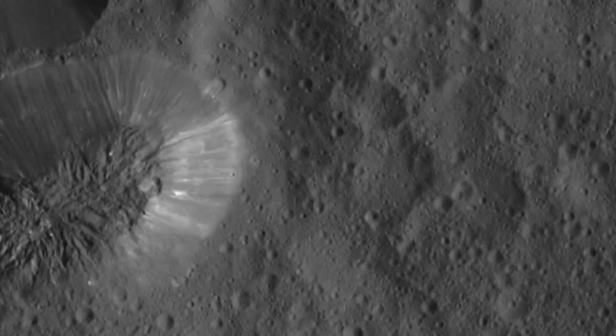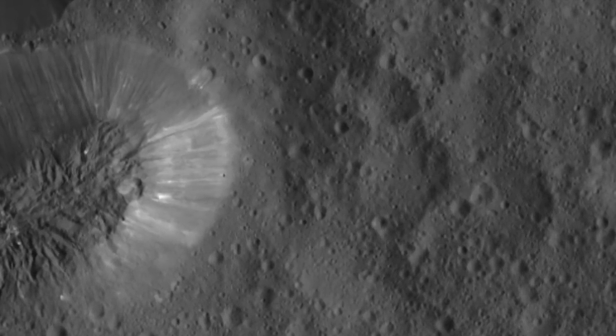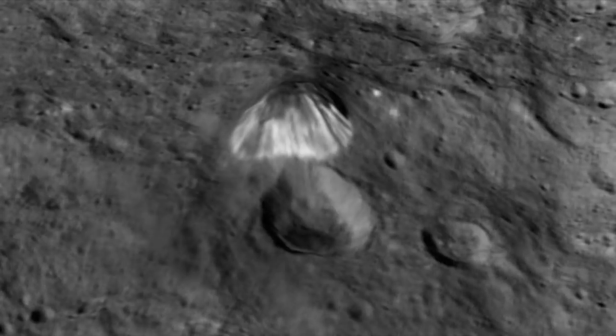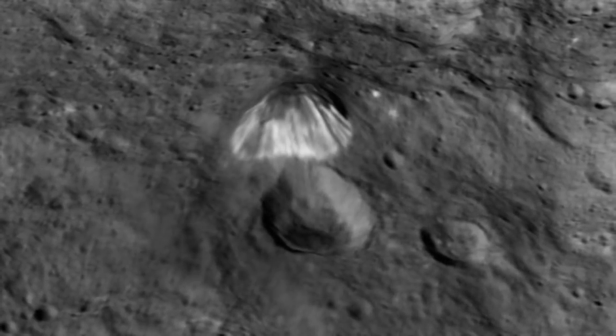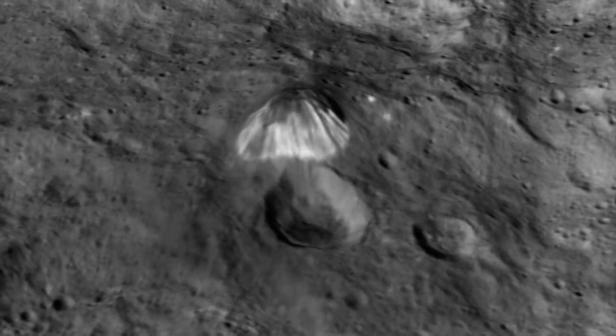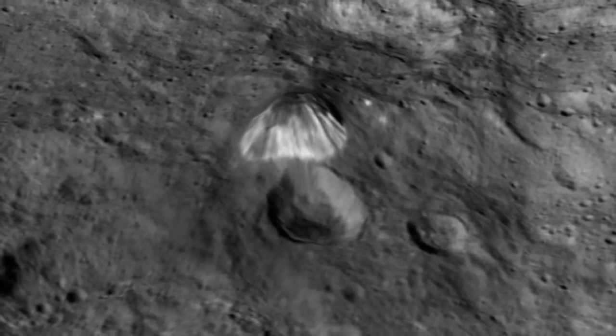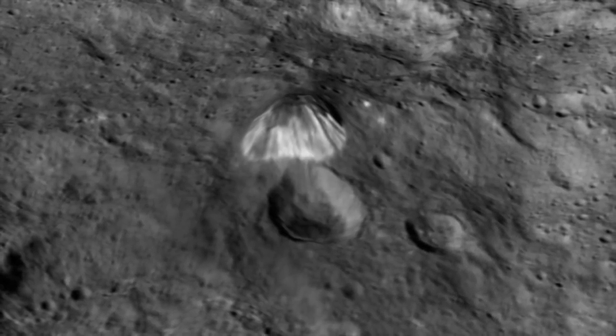The Occator Crater is 57 miles across, and as deep as Ahuna Mons is high. The large impact that tore the giant Occator Crater into the surface of the dwarf planet must have originally started everything and triggered the later cryovolcanic activity, says Andreas Nathues, framing camera lead investigator for Max Planck.